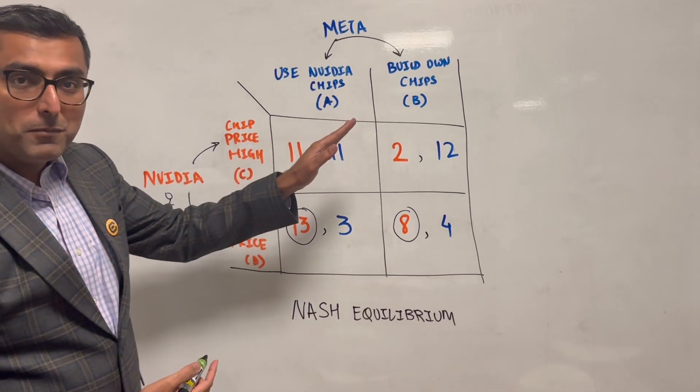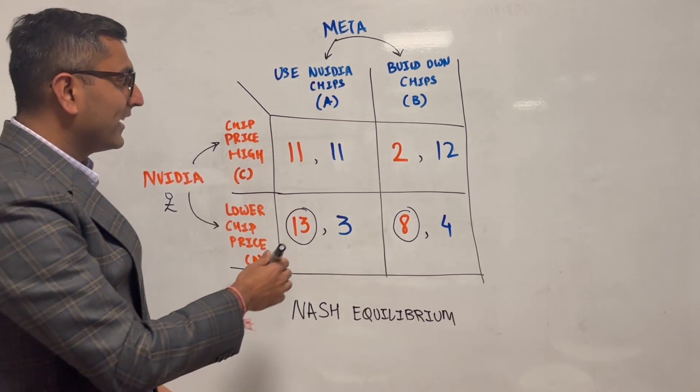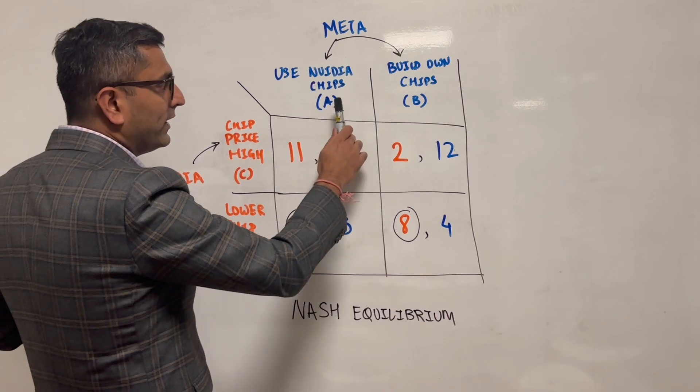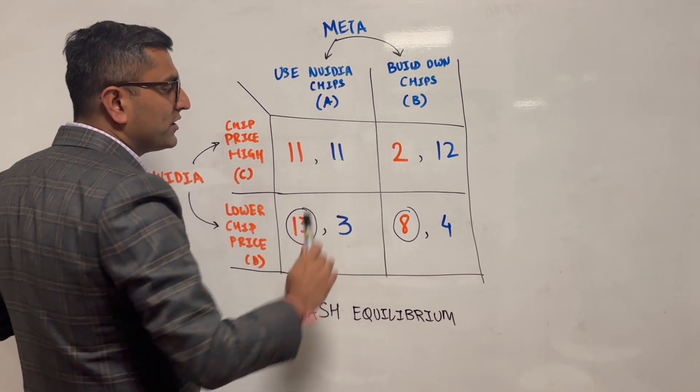Similarly, Facebook people are going to do their own calculation. And they're going to be like, okay, now I'm going to decide whether I'll go with choice A or choice B.